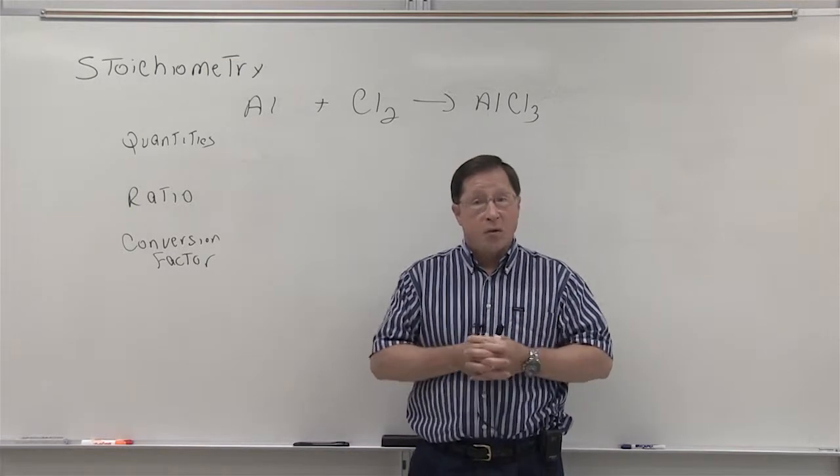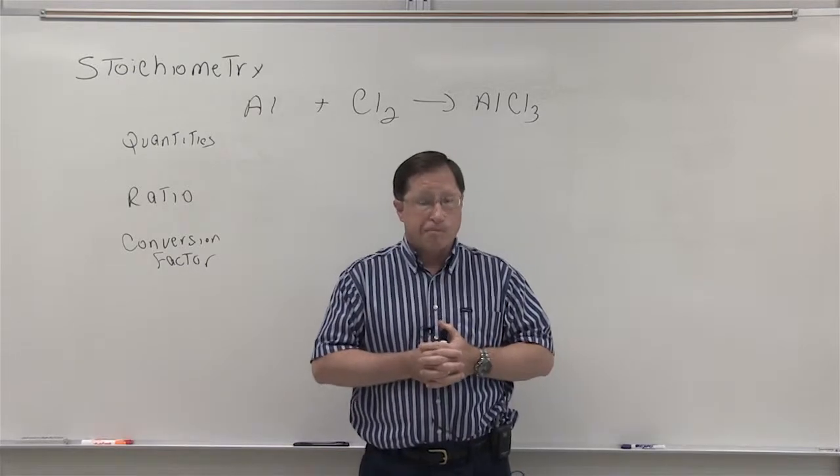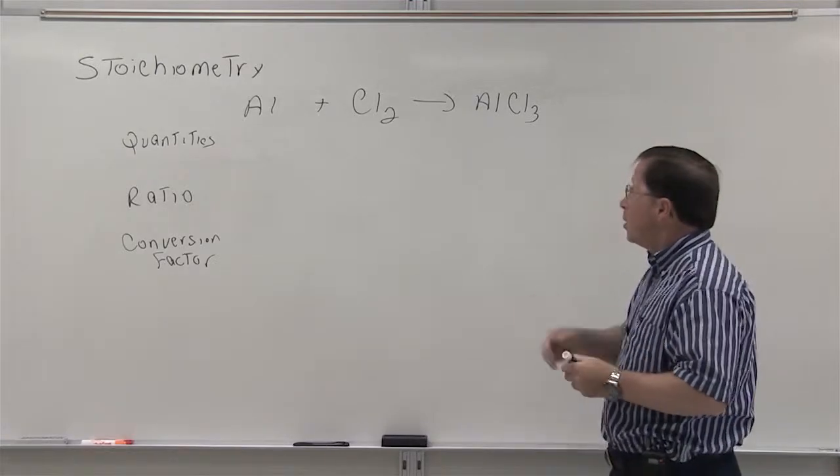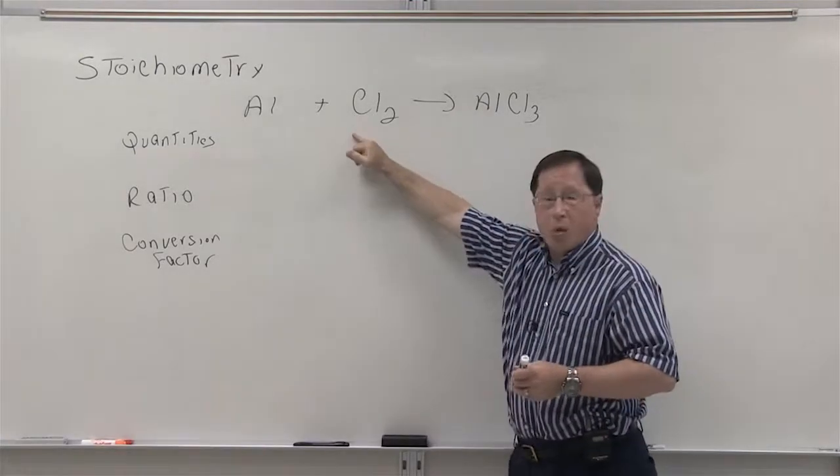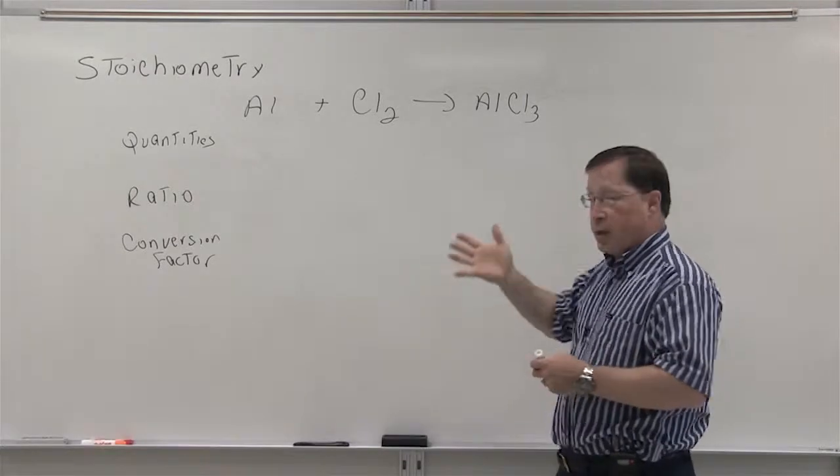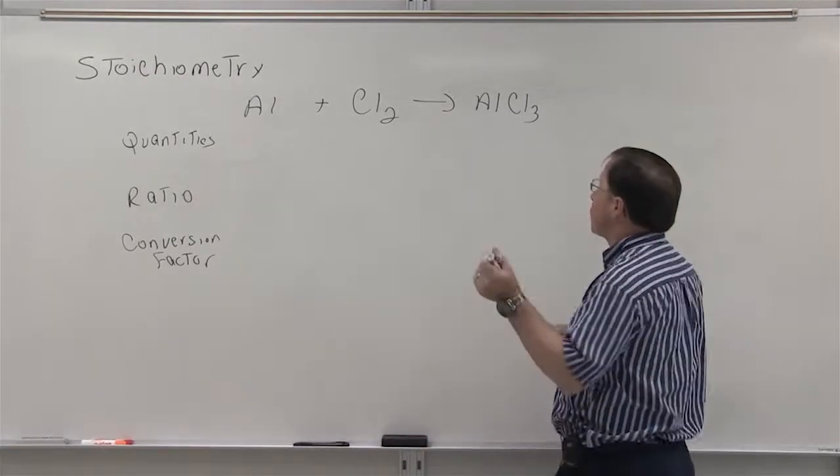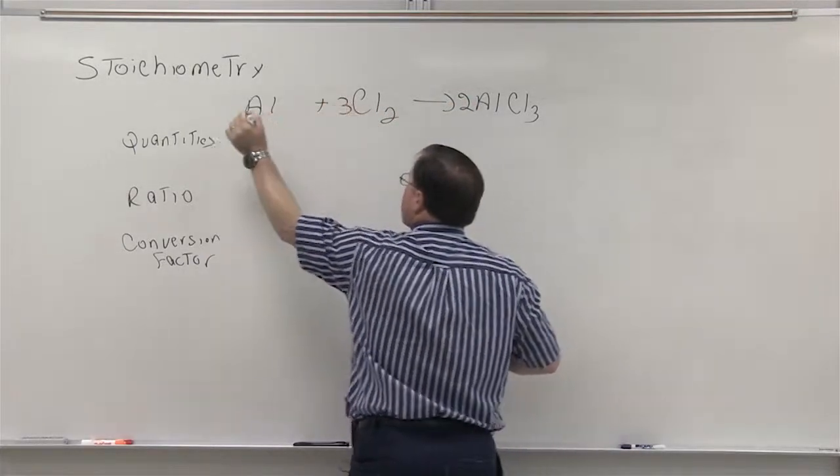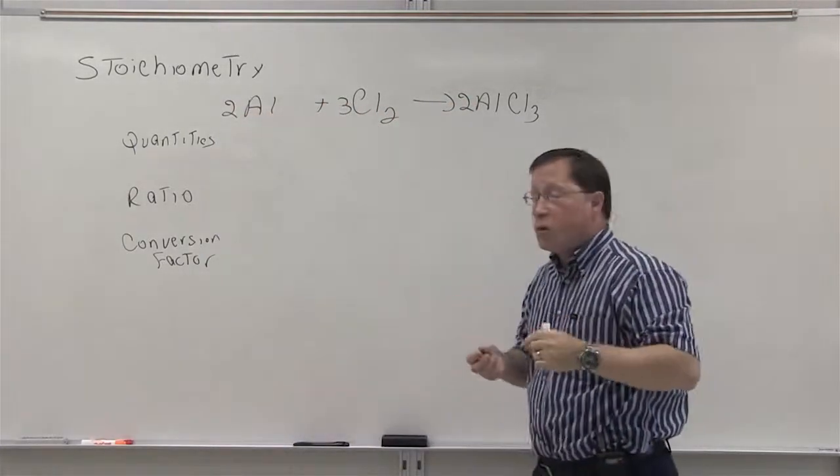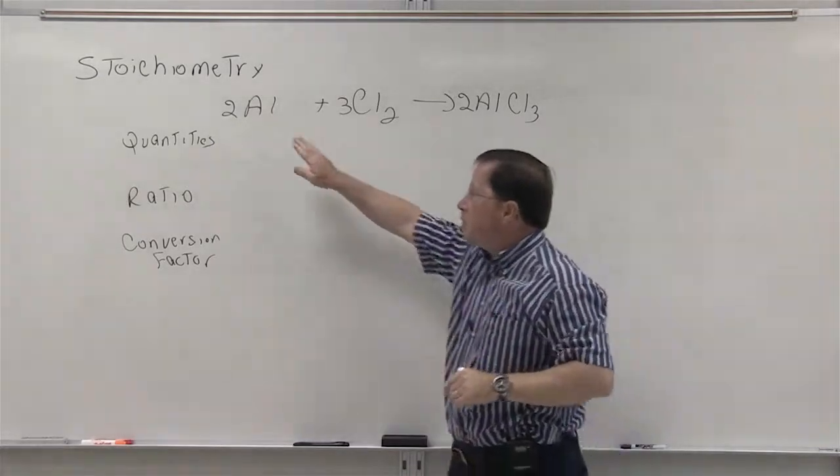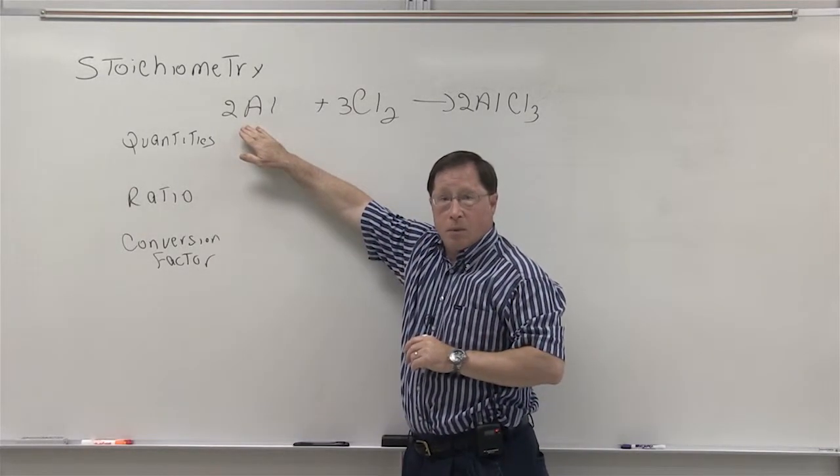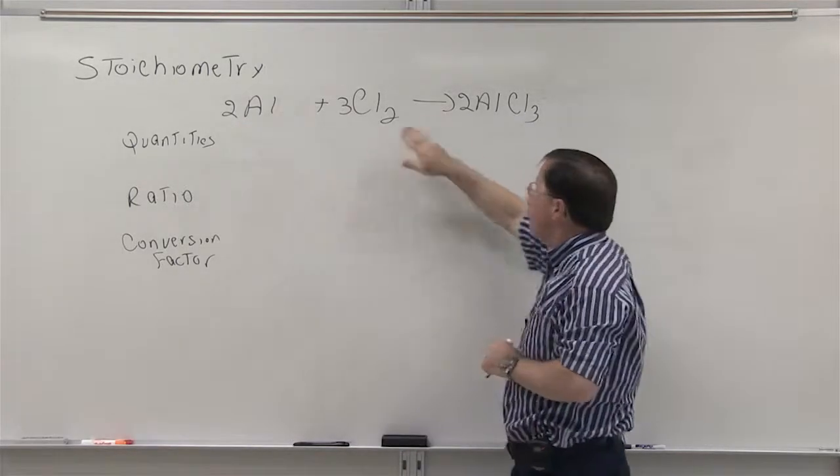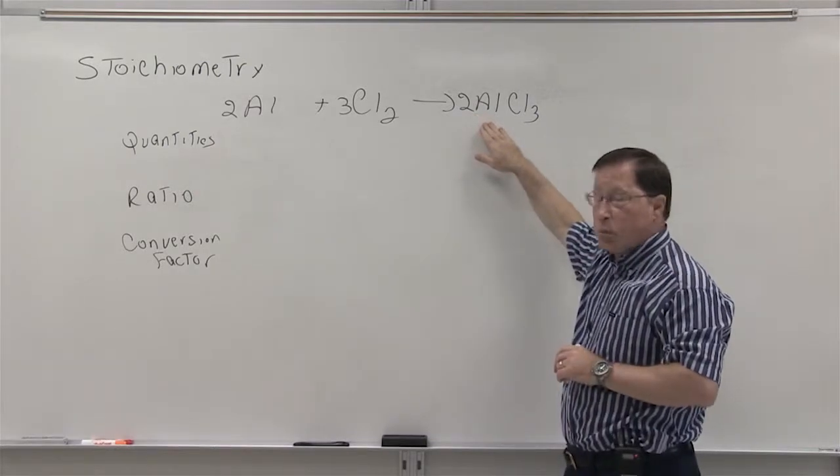Whenever you do anything in chemistry, the first thing you do is balance the equation. Balancing the equation here would simply require adjusting the coefficients so that we have the same number of atoms on each side of the equation. When we do that to balance the equation, this equation tells us we have two moles of aluminum plus three moles of chlorine giving two moles of aluminum chloride.